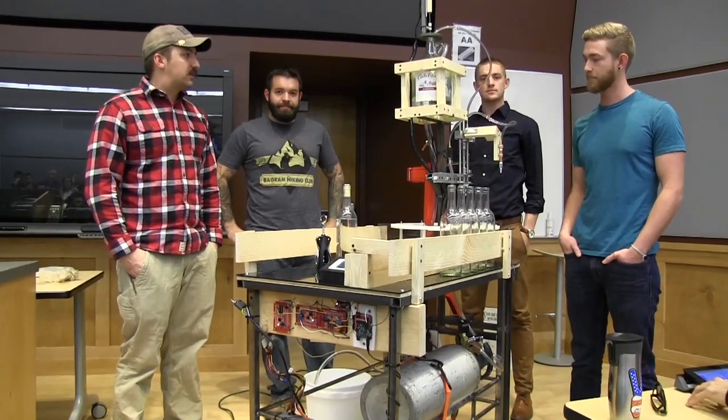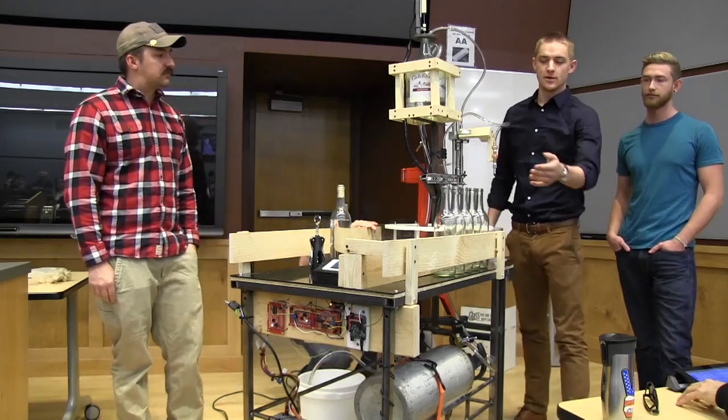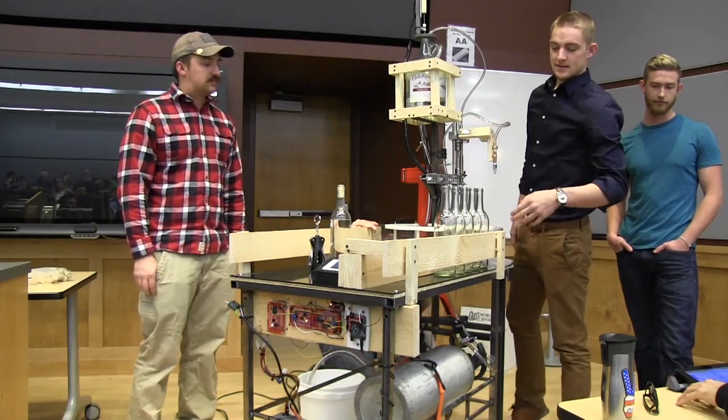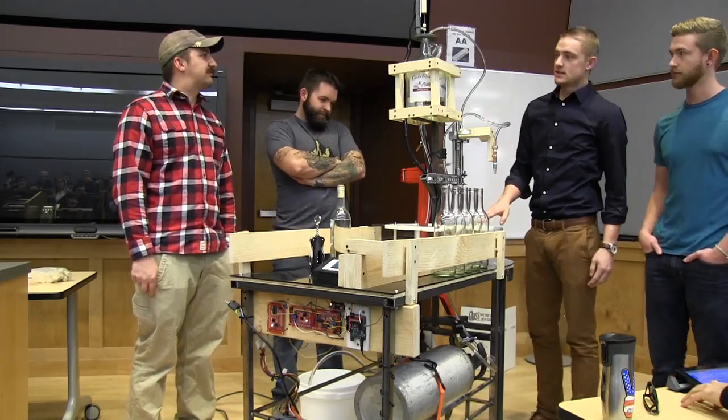So we built an automated wine bottling system. The process is going to start over here where the bottles, the empty bottles, are going to be loaded into this track, which is going to move into the rotunda that we custom CNC'd.